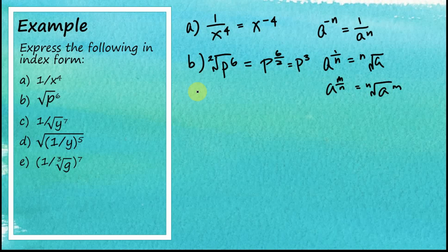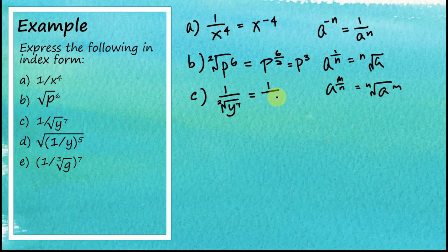Example C: 1 over the square root of y to the power of 7. The square root is the root of 2, so this is 1 over y to the power of 7 over 2. Applying the negative exponent rule, this equals y to the power of negative 7 over 2.